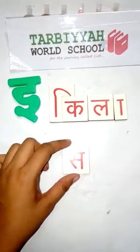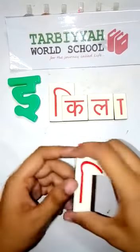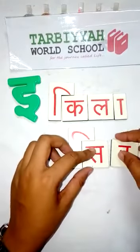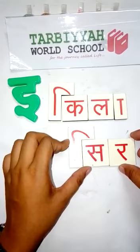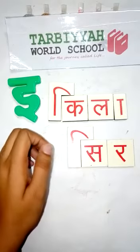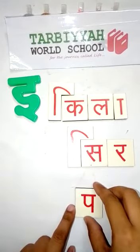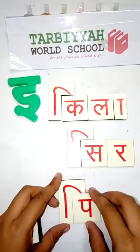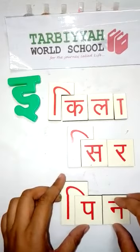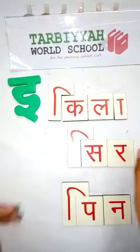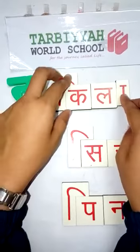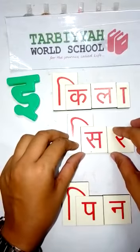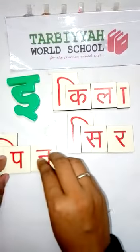Now tell me, which letter is this? Sa. And if we add Choti E ki matra, it becomes Si. And now add Ra — it becomes Sir. Now see, which letter is this? Pa. And if we add Choti E ki matra, it becomes Pi, and plus Na — it becomes Pin. These are two-letter words of Choti E ki matra. The first word is Kila, the second one is Sir, and the third one is Pin.